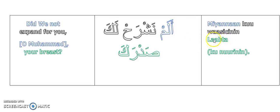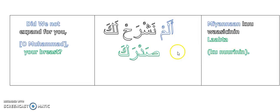Laabtaada. Kalbigaada — laabta ayaa loo yaqaan sadar. Ku wasin, ku nurin. Rabbir Rahman, kalbi Nabiq wu nuriyyi, uwa wasiyi, wahawayelaga.